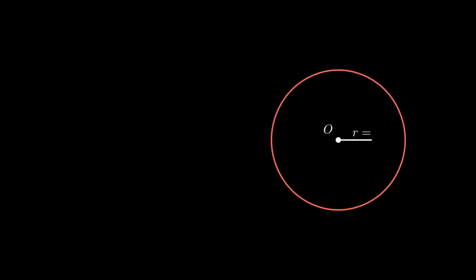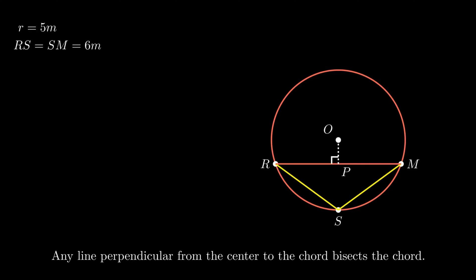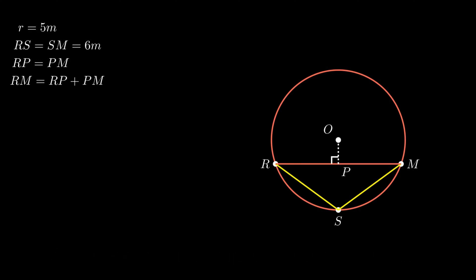Moving on to the next problem. The problem states that 3 girls are standing on a circle of radius 5 meters. Points R, S and M denote the positions of Reshma, Salma and Mandip. The distance between Reshma and Salma equals the distance between Salma and Mandip, which is 6 meters. We need to calculate the distance between Reshma and Mandip, i.e. the length of segment RM. To find this, we construct a perpendicular from point O to segment RM meeting at point P. By the theorem that any line perpendicular from the center to the chord bisects the chord, segment RM becomes twice of segment RP.